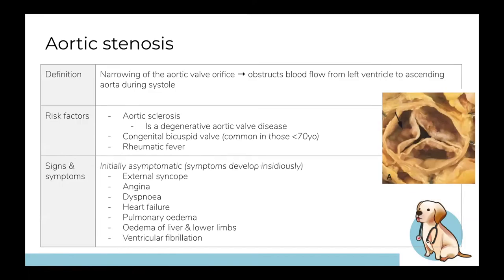Aortic stenosis is a valvular disease characterized by narrowing of the aortic valve, resulting in decreased outflow of blood from the left ventricle into the aorta due to obstruction. This obstruction causes chronic excess load on the left ventricle and can be a cause of left ventricular heart failure. The three main symptoms of aortic valve stenosis are syncope, angina, and dyspnea — SAD — which is a helpful mnemonic.